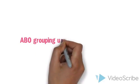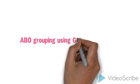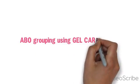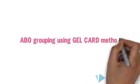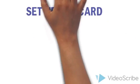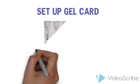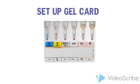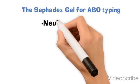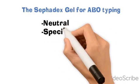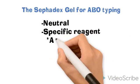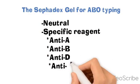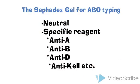Let's see the ABO grouping using the gel-card method. First, prepare the gel card for forward and reverse testing. The gel card for ABO typing can be in the form of neutral or specific reagents such as anti-A, anti-B, anti-D, or anti-AB.